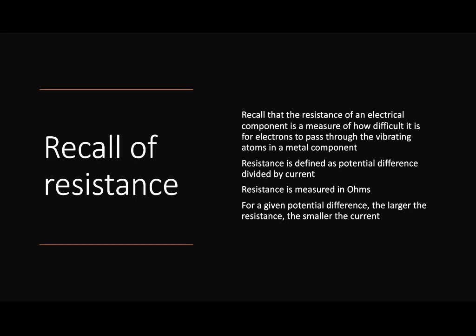We calculate resistance — we define it as the potential difference across a component divided by the current passing through that component, and we measure it in ohms. So for a given potential difference, the larger the resistance, the smaller the current. They are inversely proportional: as we increase resistance, we decrease current.